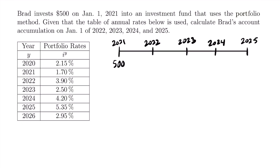We want to calculate the accumulation of Brad's $500 at the beginning of each of these years, so we need to calculate four different amounts: the value in 2022, 2023, 2024, and 2025. To start, we'll calculate the accumulation at the beginning of 2022, which means accumulating interest on this $500 for the whole year of 2021, from the beginning of 2021 to the beginning of 2022. Since Brad invested his $500 on January 1st of 2021, his investment will generate interest throughout the year of 2021.